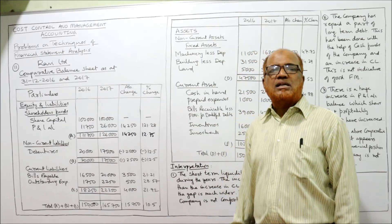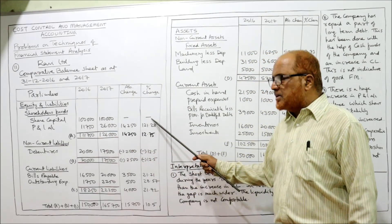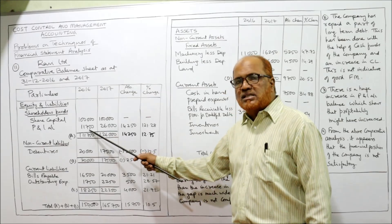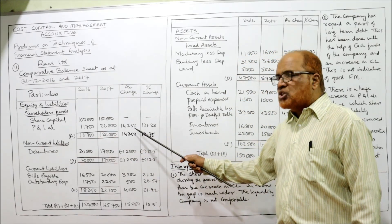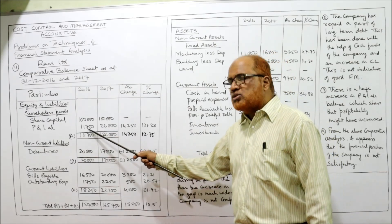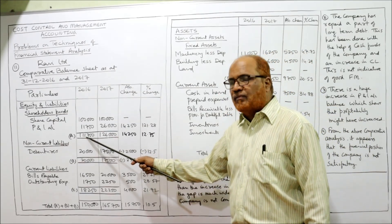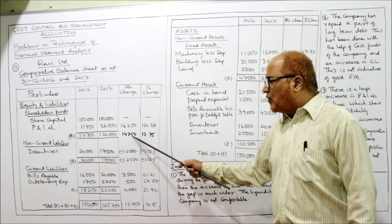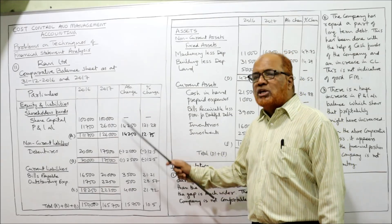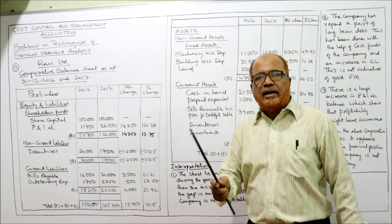The first two columns are now complete. For absolute change: current year value minus last year value. For example, P&L account: 26,000 minus 11,750 gives absolute change of 14,250. Percentage change: 14,250 divided by 11,750 into 100 equals 121.28%. For total non-current assets: 1,26,000 minus 1,11,750 equals 14,250, and 14,250 divided by 1,11,750 equals 12.75%. All calculations follow the same formula: absolute change is current year minus last year, percentage change is absolute change divided by last year's value into 100.